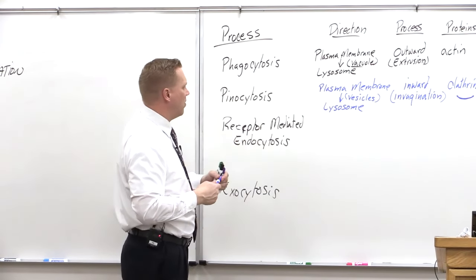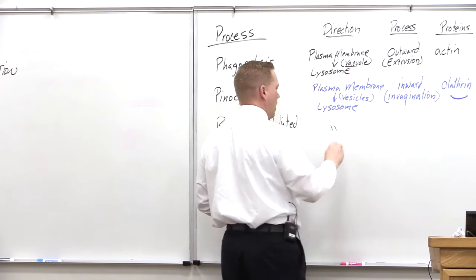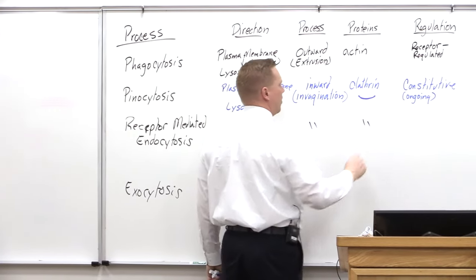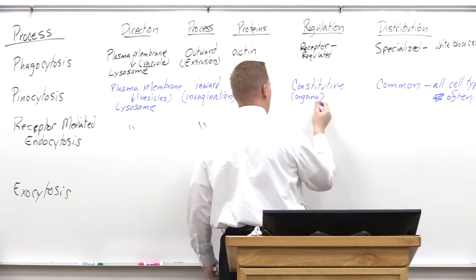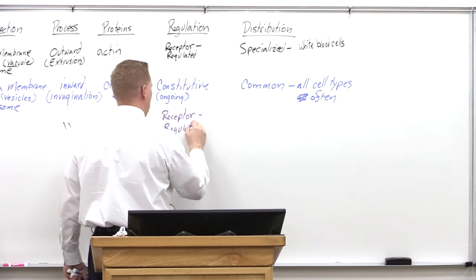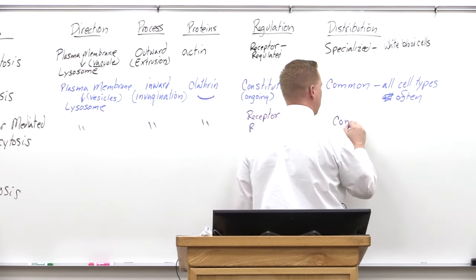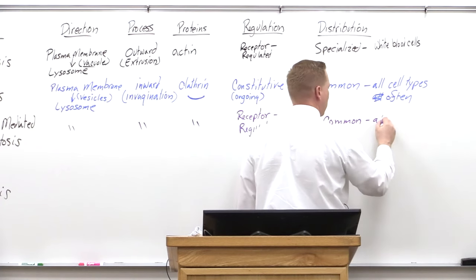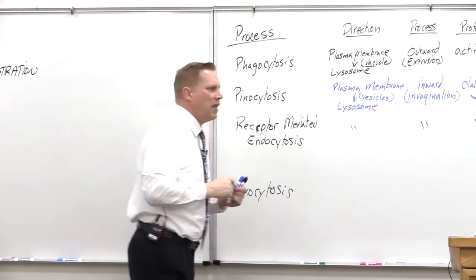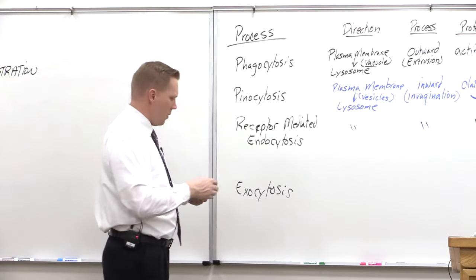Receptor-mediated endocytosis shares the same direction, vesicle size, and invagination process as pinocytosis, and also uses clathrin. The key difference is regulation: it's regulated by whether those receptors are carrying cargo or not. Its distribution is also common, though different cells may scavenge different things depending on the types of receptors they place on the surface.